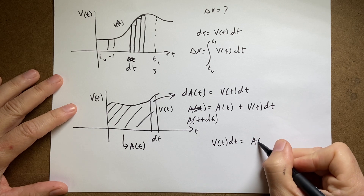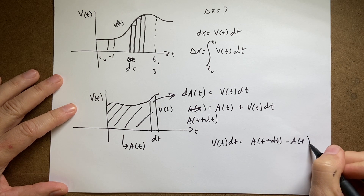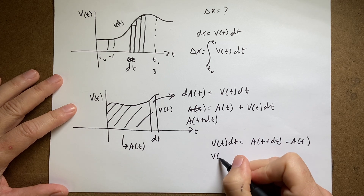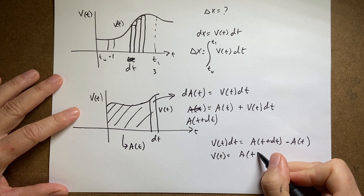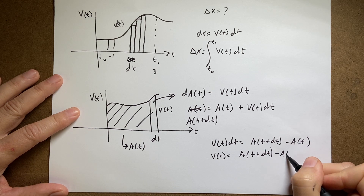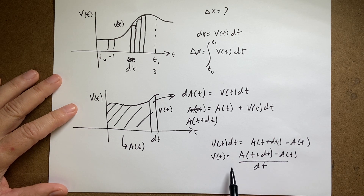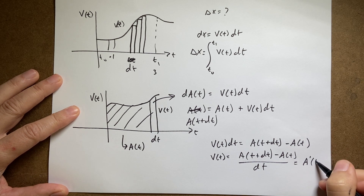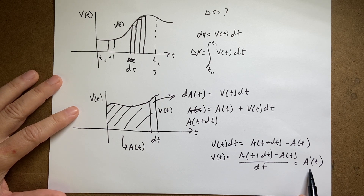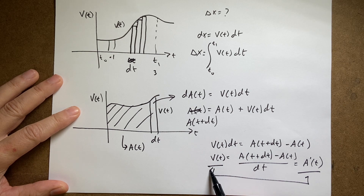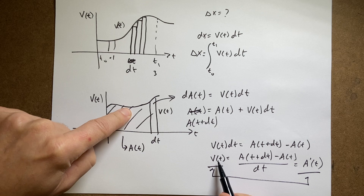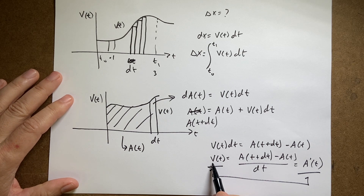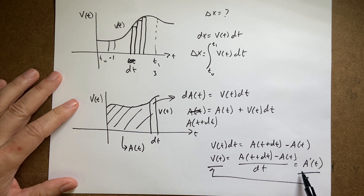Solving for v(t) dt: that equals A(t + dt) minus A(t). Dividing both sides by dt gives v(t) equals [A(t + dt) minus A(t)] divided by dt. If I take the limit as dt goes to zero, this is A prime of t — the derivative of the area. So the derivative of the area equals the function. That means the antiderivative of the function equals the area — that's the fundamental theorem of calculus.